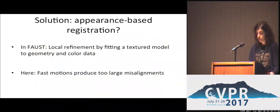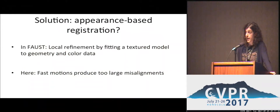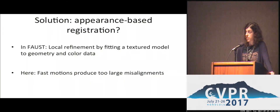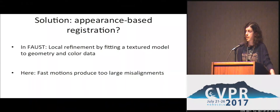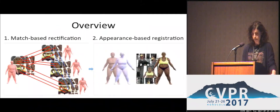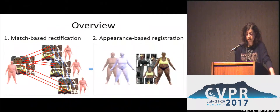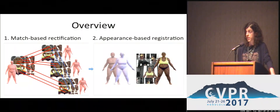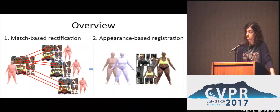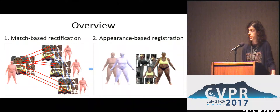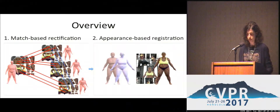So how can we solve this? One solution would be to try appearance-based registration, as in FAUST, where a textured body model was fit to geometry and color data to refine an initial set of geometry-based registrations using gradient-based optimization. Here, however, misalignments are too large, so the optimization gets stuck in local minima. Instead, we propose a two-stage approach. In stage one, we try to reduce misalignment and get a better initialization by computing a set of correspondences or matches in 2D between texture maps and then mapping them to 3D. In the second stage, we refine our result by performing appearance-based registration using a body model.